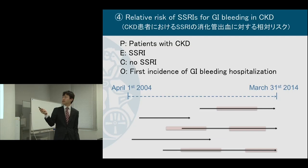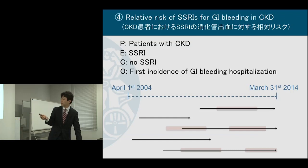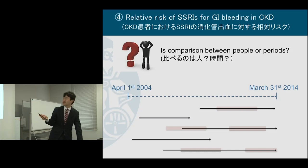So among patients with CKD, we're comparing SSRI use versus no SSRI use on the first instance of GI bleeding hospitalization. This is the CKD cohort again, and the pink color indicates antidepressant prescription periods.